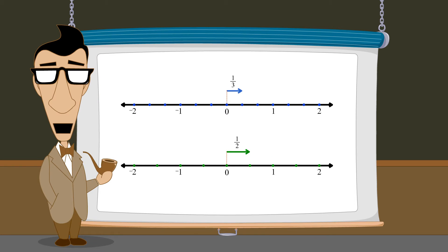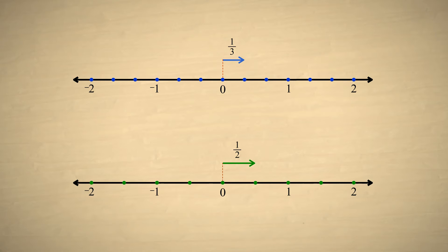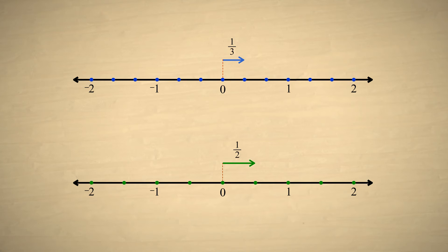The solution is to create new divisions which will work for both fractions. We need to divide the unit length in such a way that each fraction will fit perfectly into these new divisions. If we do this, then both fractions can be represented by some number of these new divisions. Since both fractions will then use the same-sized divisions, they will have the same denominator — in other words, they will have a common denominator. We can then simply add their numerators.